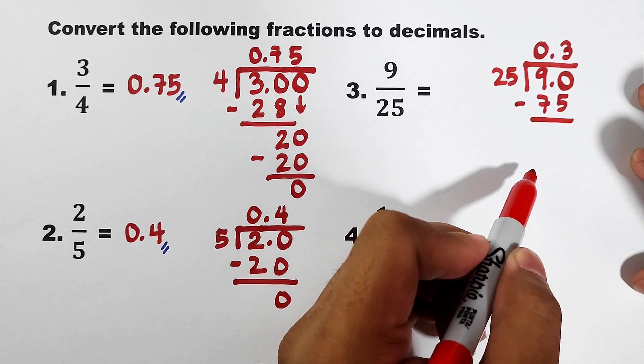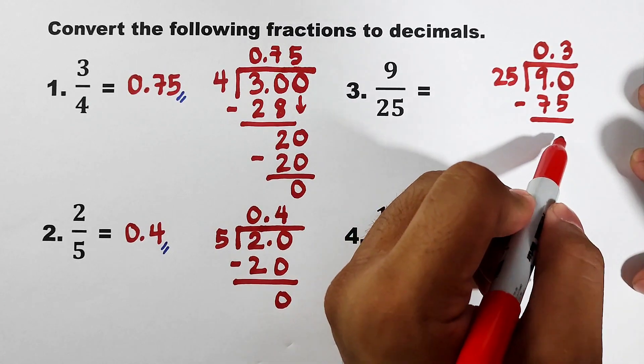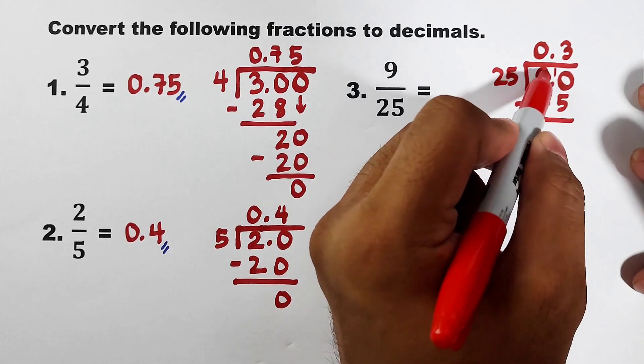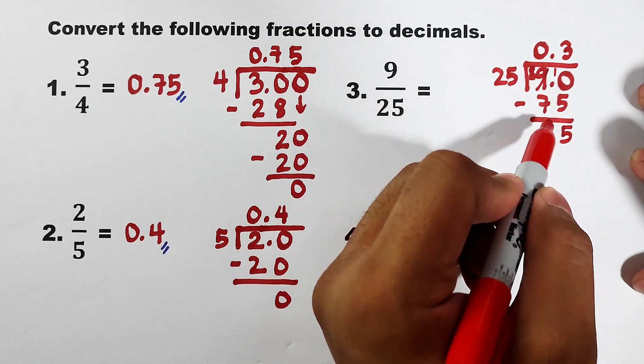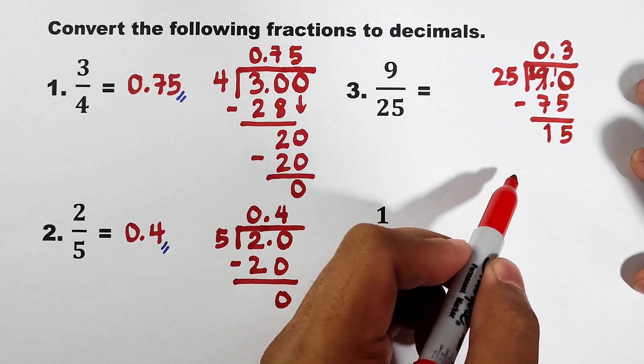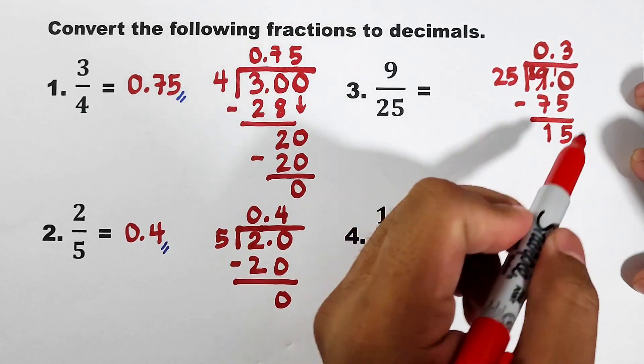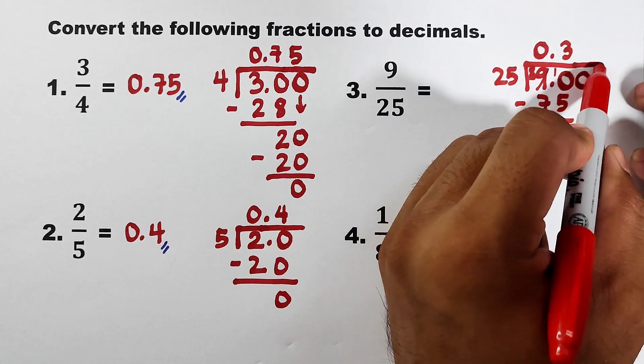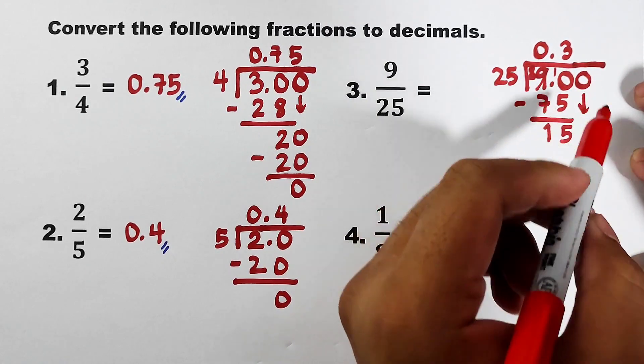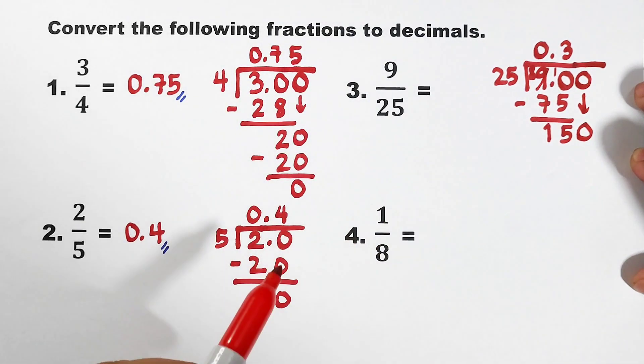And subtracting this, it will give us 15. Then, we still have this remainder 15. Meaning, we will extend this one and put in 0 here. So, you may bring down 0 here. It will become 150.